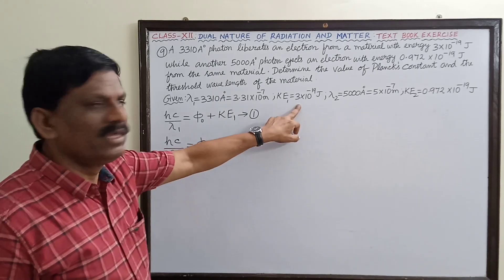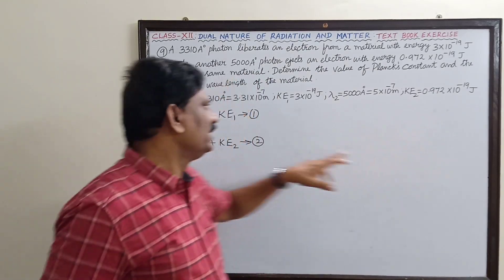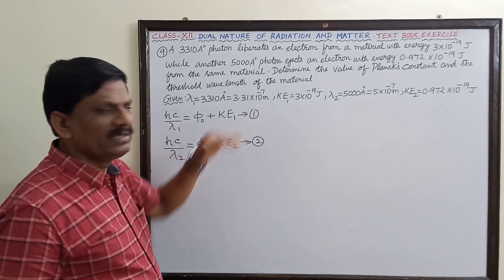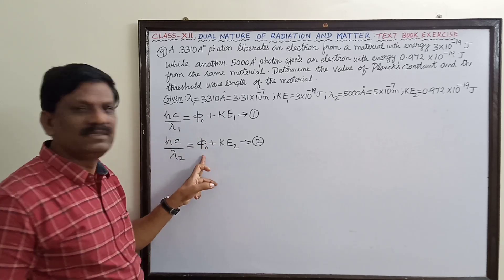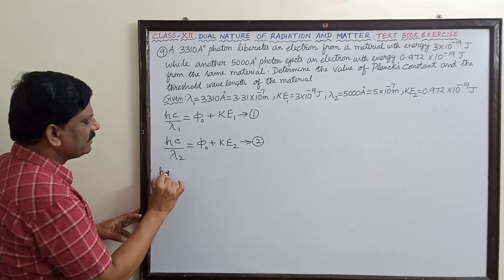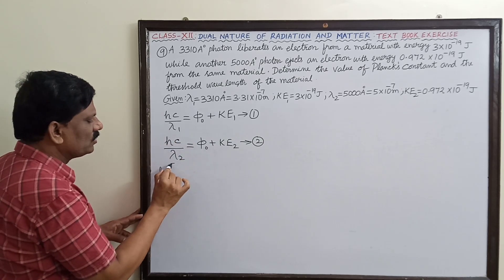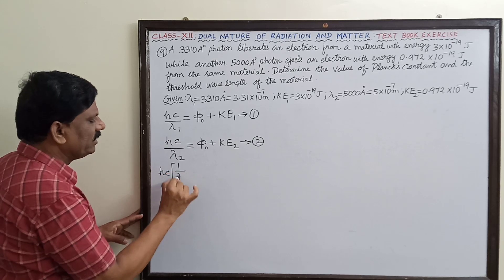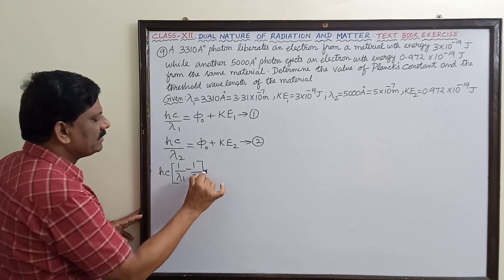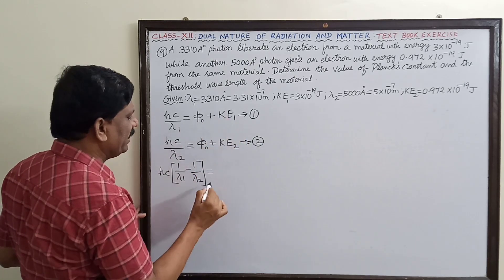You can see that KE₁ is greater than KE₂. When I subtract equation 2 from equation 1, I can eliminate the work function φ₀. The left-hand side becomes hc/λ₁ − hc/λ₂, which can be written as hc(1/λ₁ − 1/λ₂), and this equals KE₁ − KE₂.